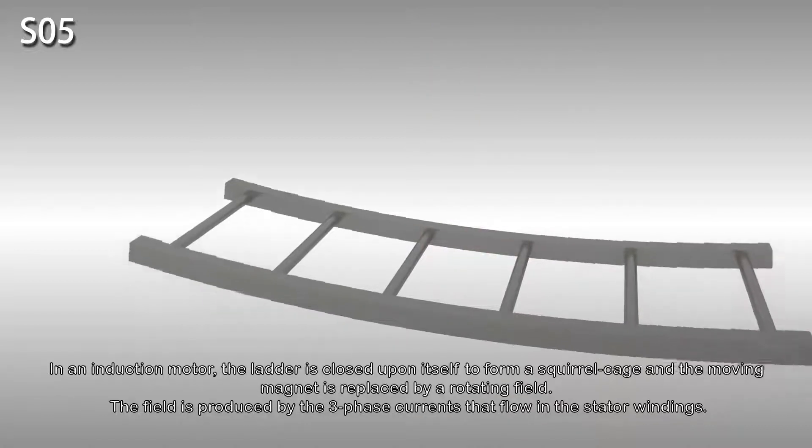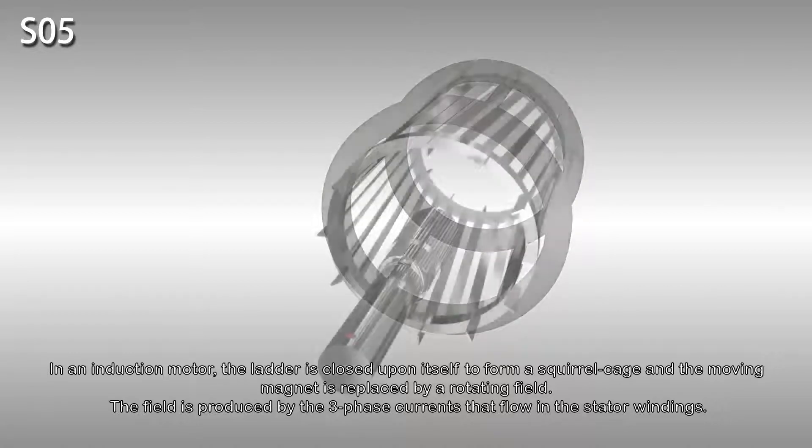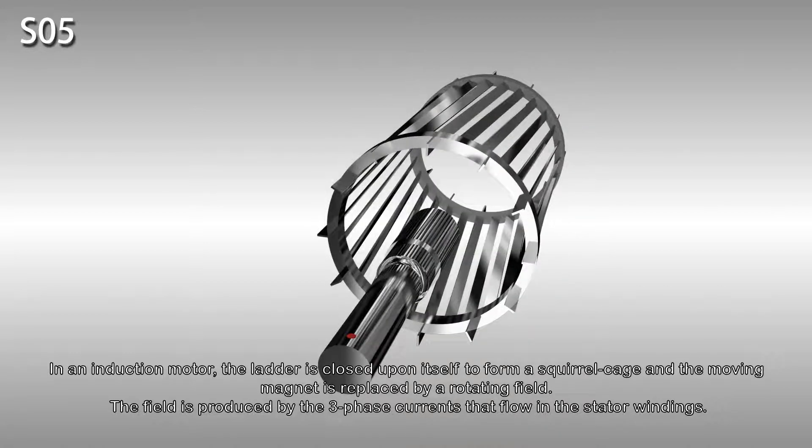In an induction motor, the ladder is curved to form a squirrel cage, and the moving magnet is replaced by a rotating field. The field is produced by the three-phase currents that flow in the stator windings.